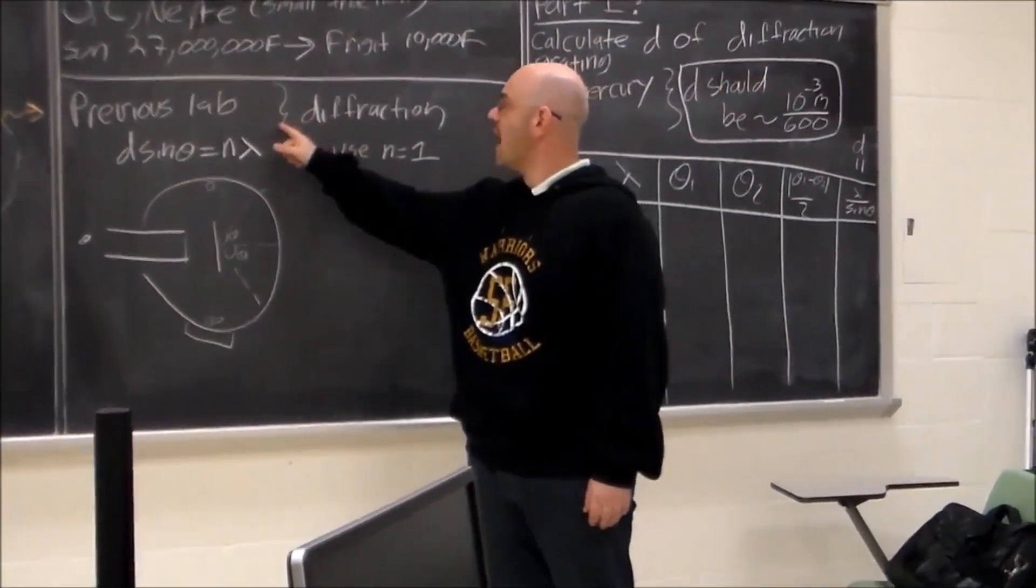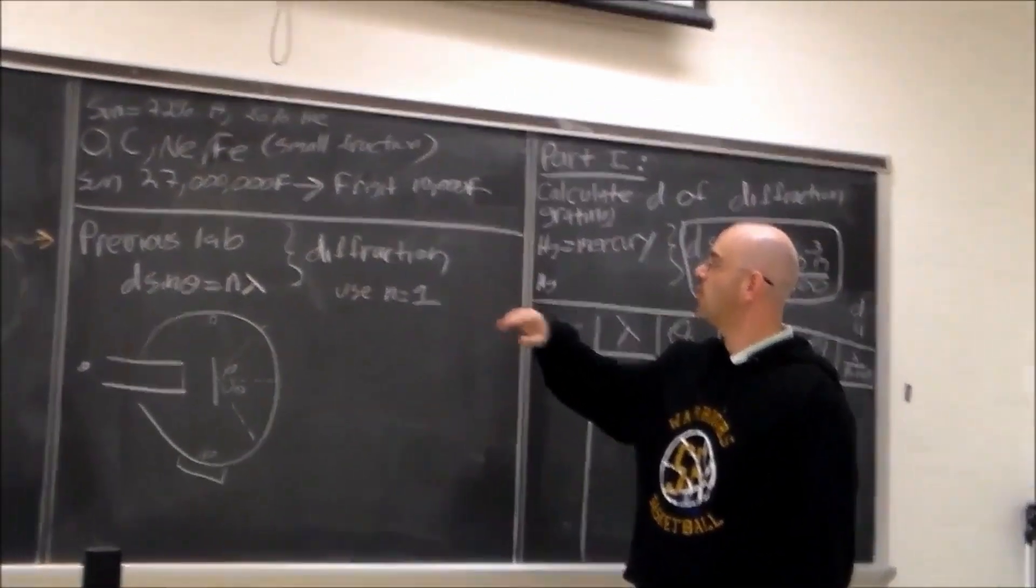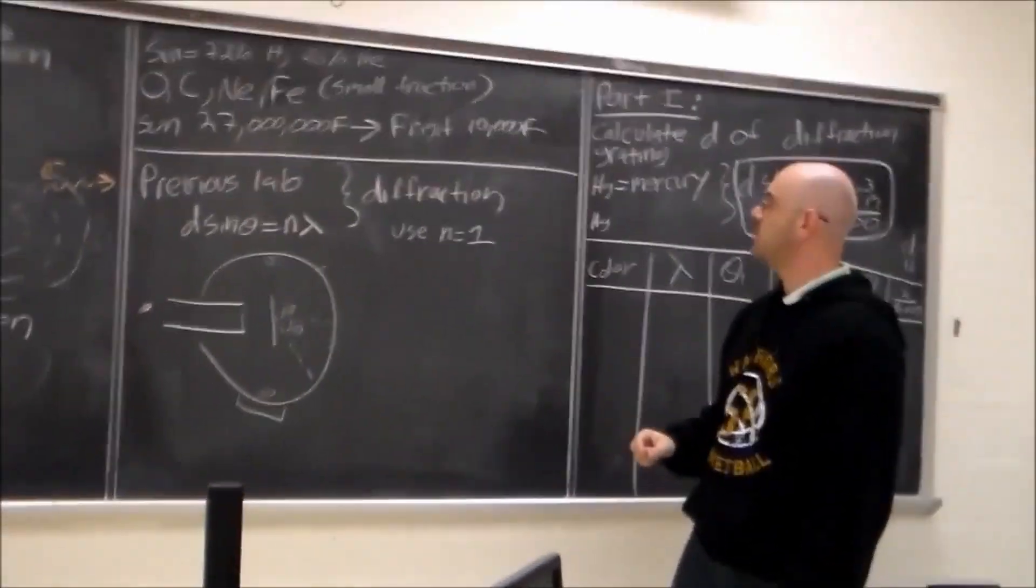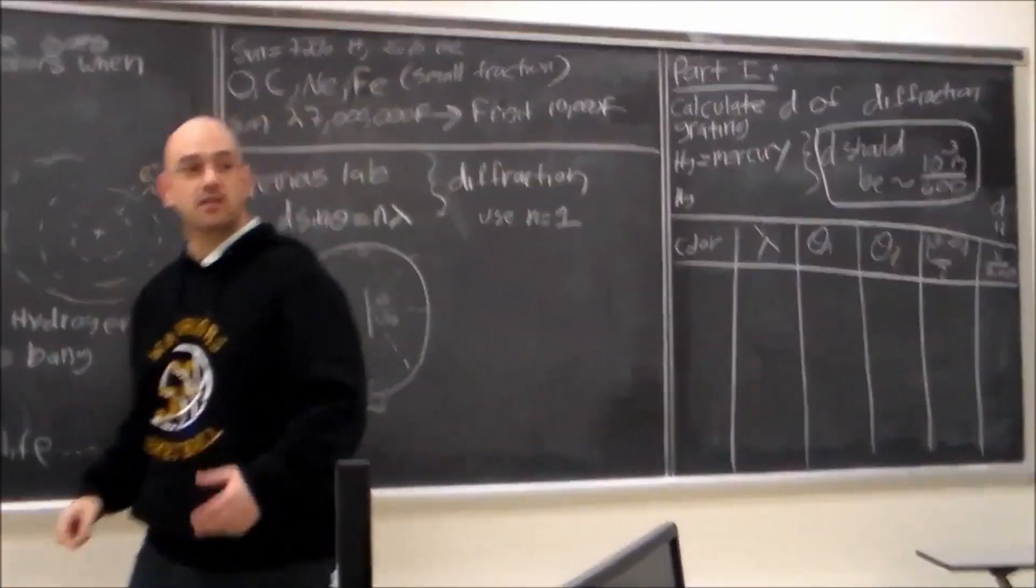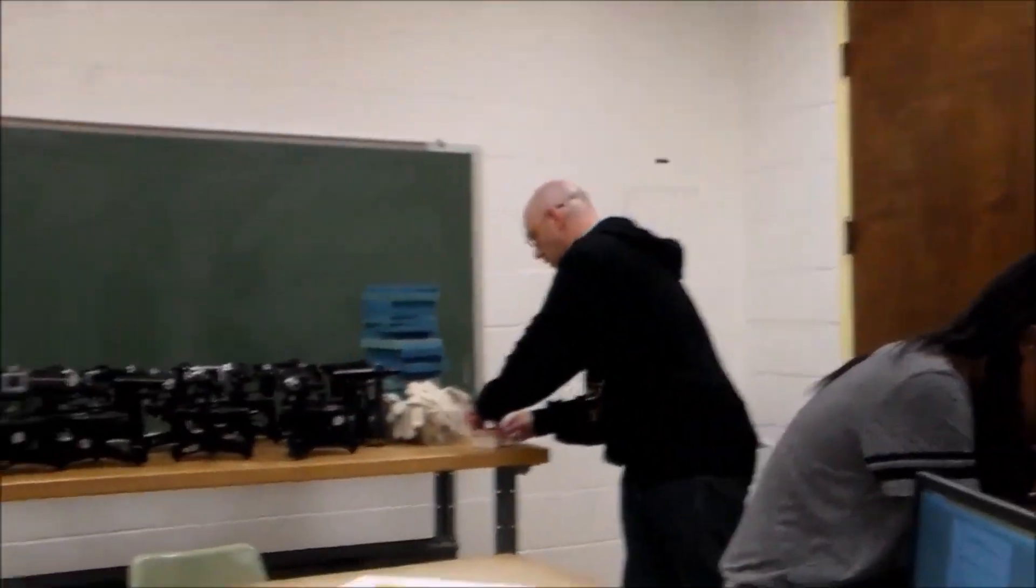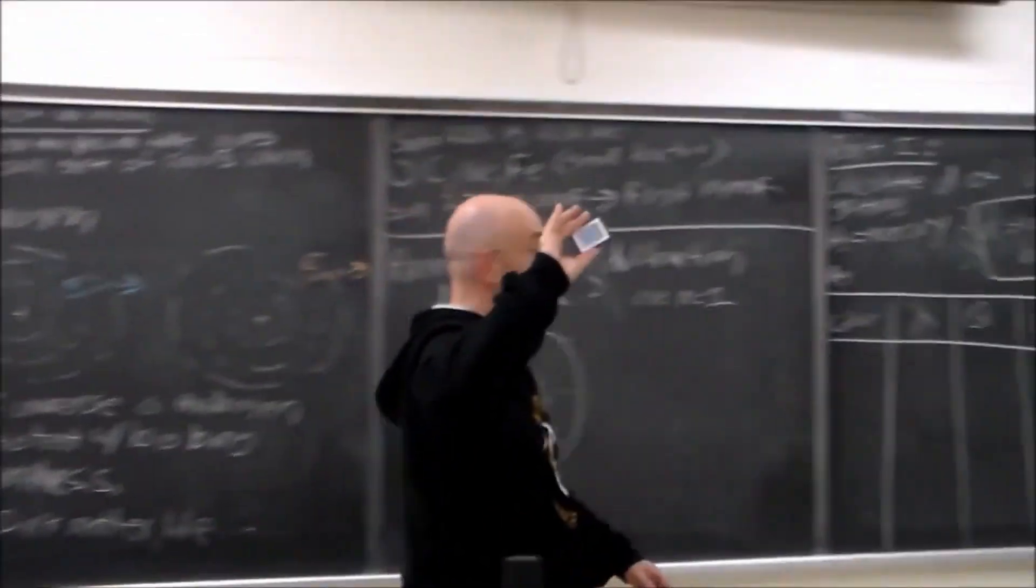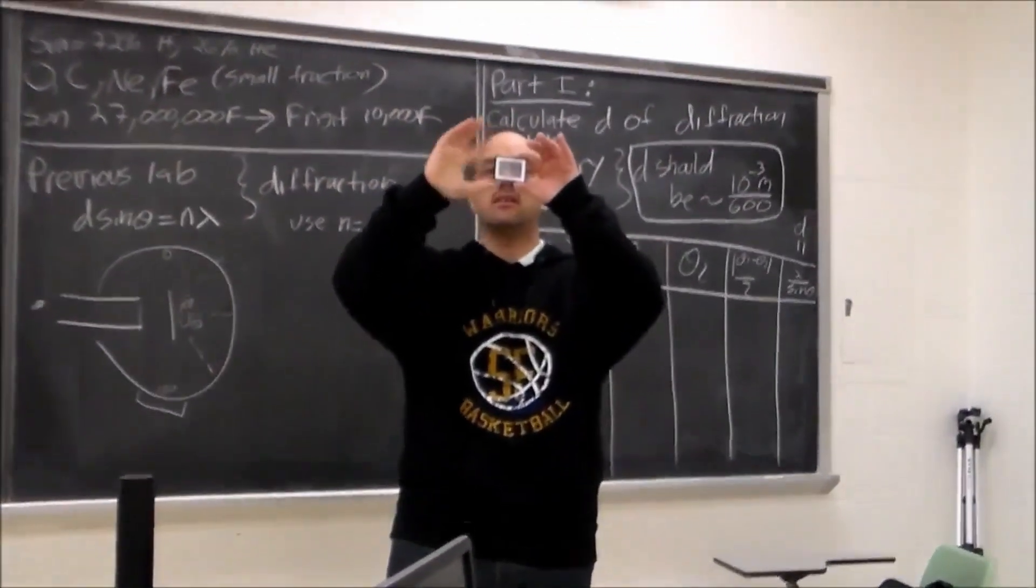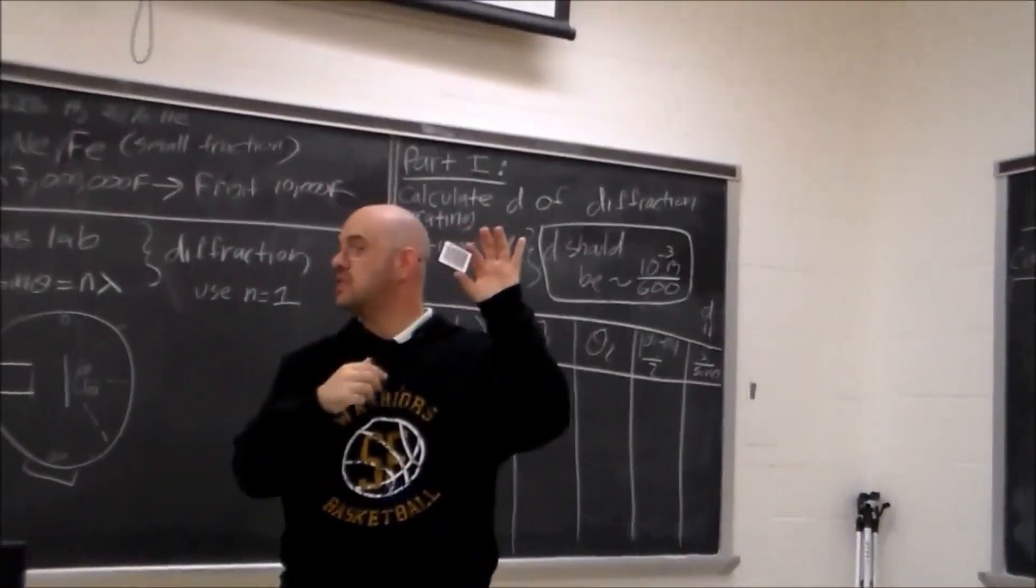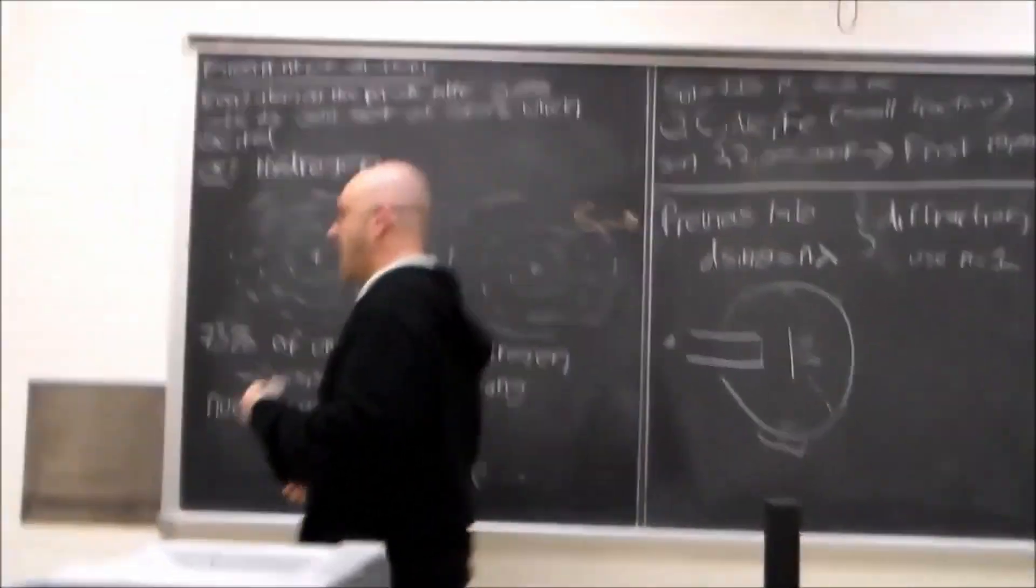Okay, so from the previous lab, we learned that diffraction, for a diffraction grating, d sine theta is equal to n lambda, where a diffraction grating is, we have a diffraction grating. So this is a diffraction grating, and this diffraction grating has many, many slits, many lines per centimeter.